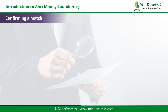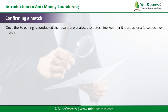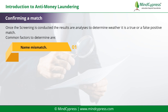Confirming a match: once the screening is conducted, the results are analyzed to determine whether it is a true or false positive match. True matches are related to the party screened, whereas false positives are not. Common factors to determine include: 1. Name mismatch, for example Robert BS vs. Robert O.